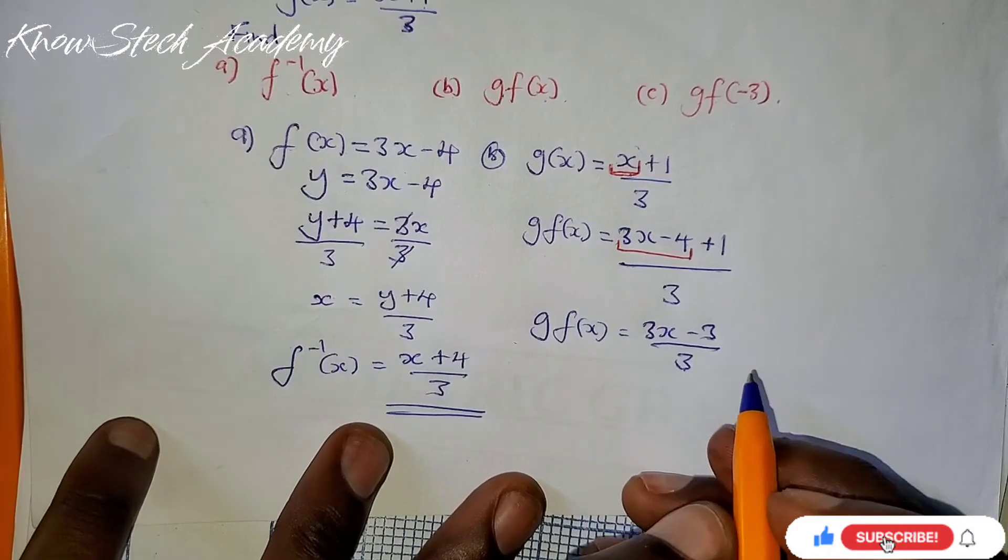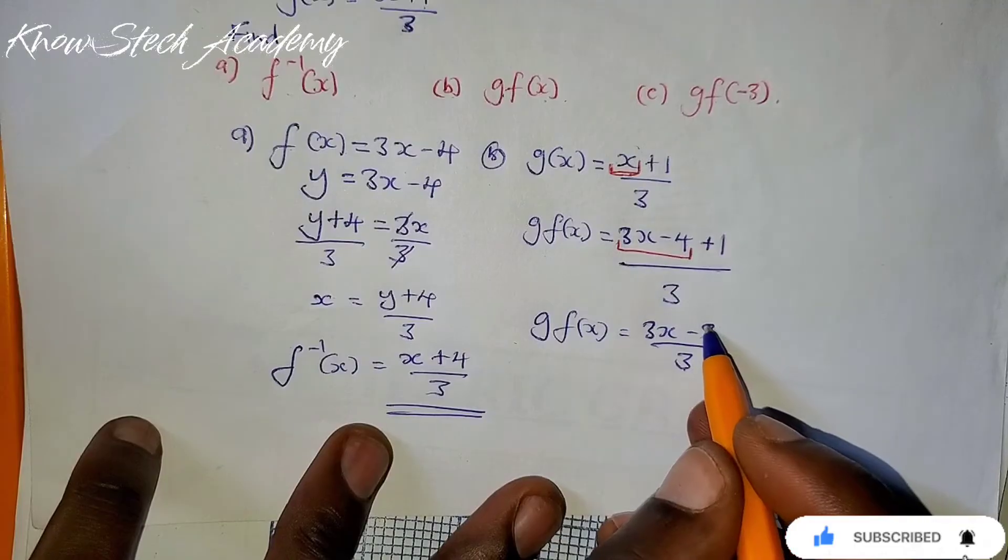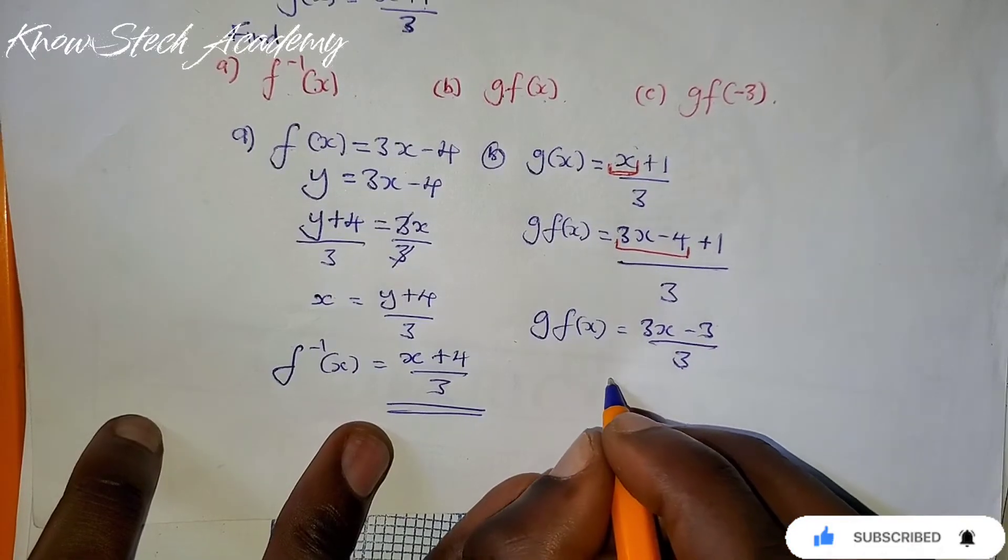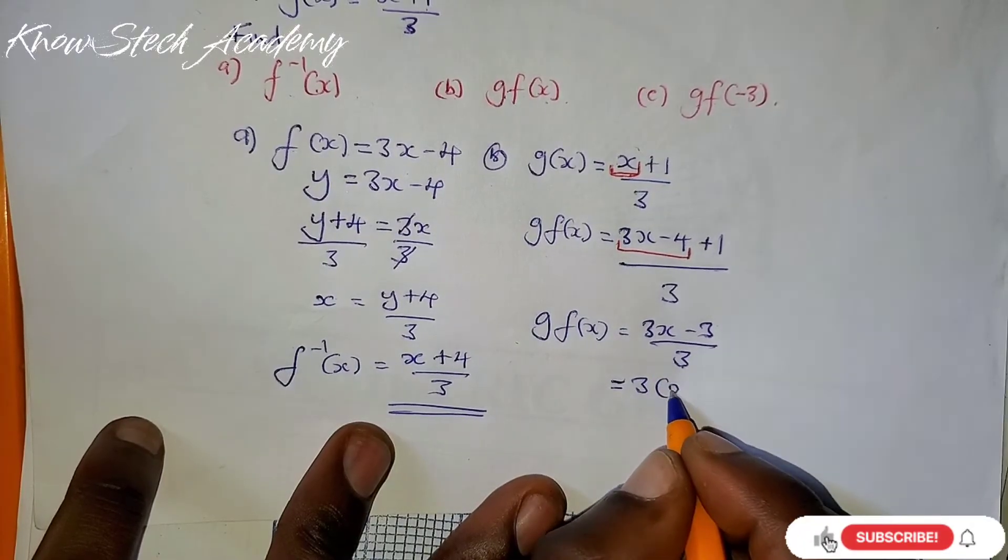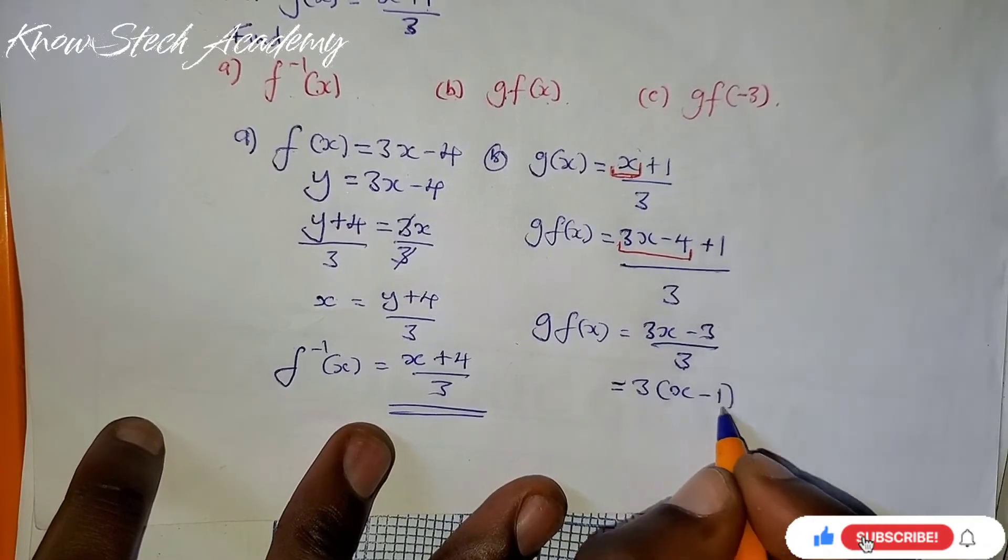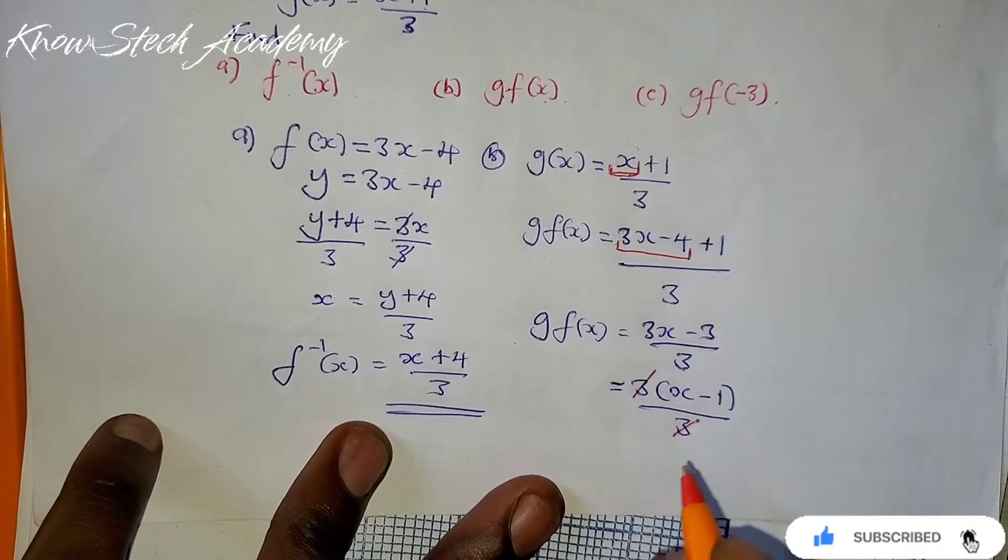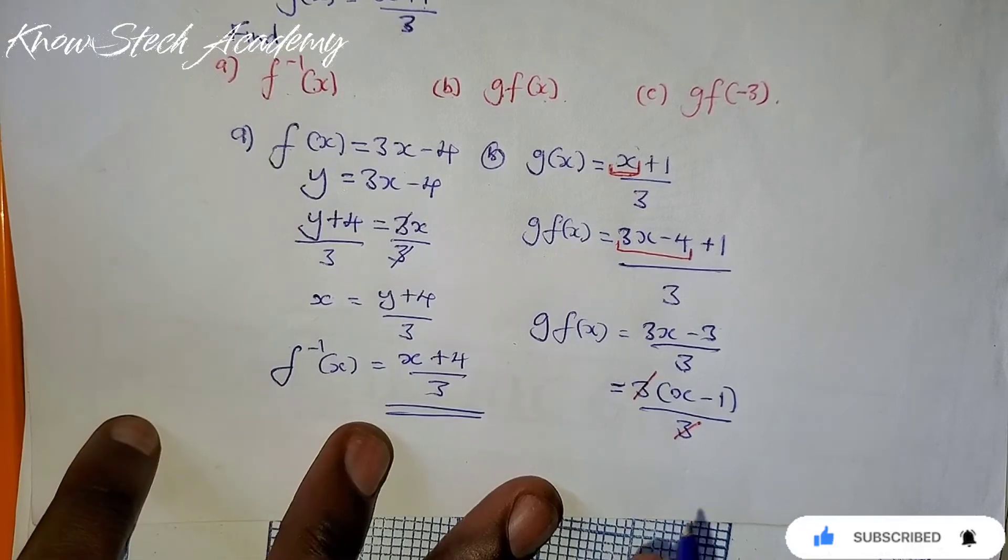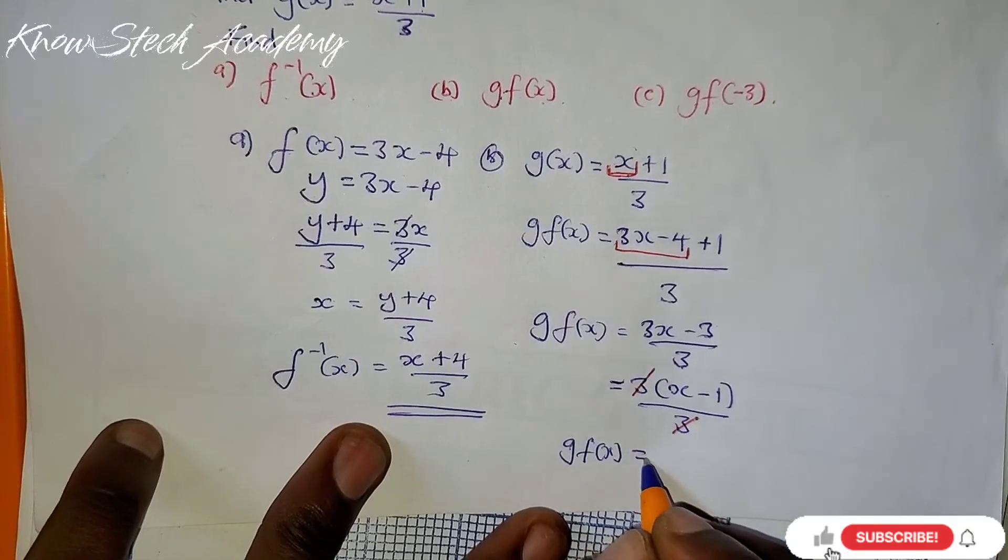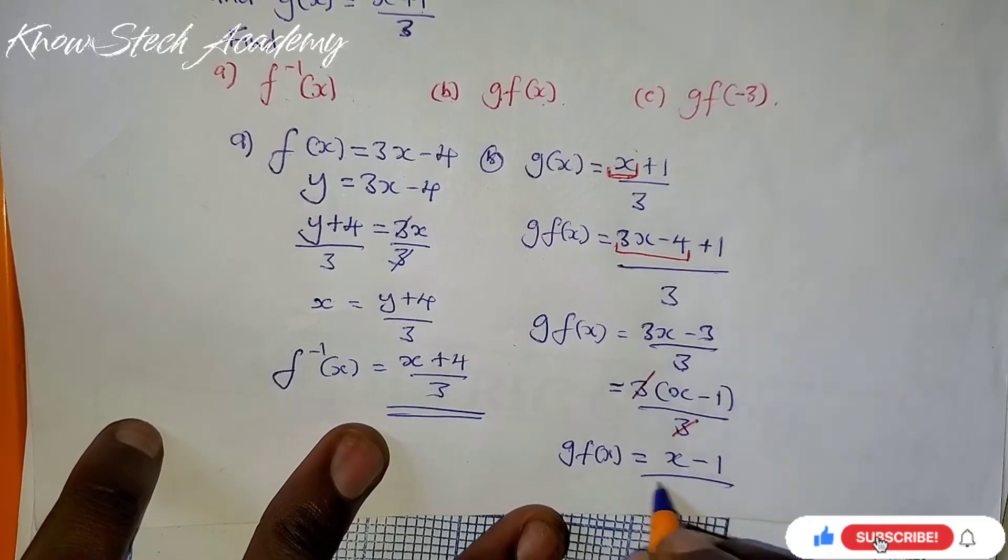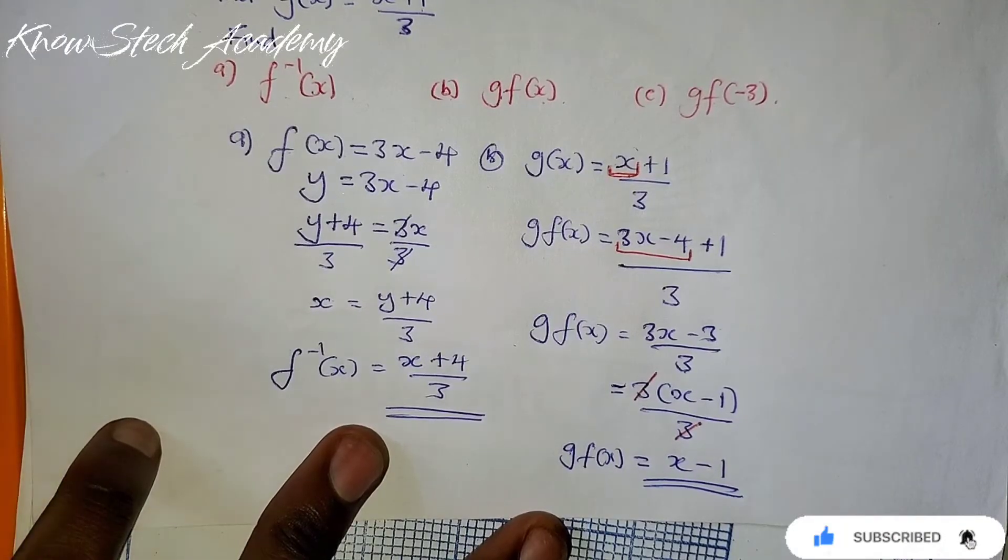So what you can do here, you can factorize on top here, then reduce further. Let's go the factorization way. Common factor is 3. 3 into 3x, remain with x. 3 into 3, 1 over 3. Then we can cancel out the 3s, this one and this one. Leaving us, giving us gf(x) as x - 1 as the answer. Just x - 1.